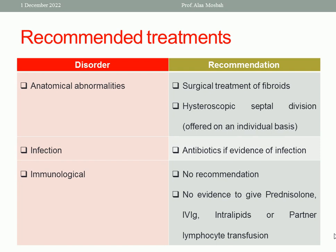Regarding immunological causes: inherited thrombophilia needs no treatment. There is no recommendation for immunological failure, and there is no evidence to support giving prednisolone, intravenous immunoglobulin, intralipids, or partner lymphocyte transfusion.